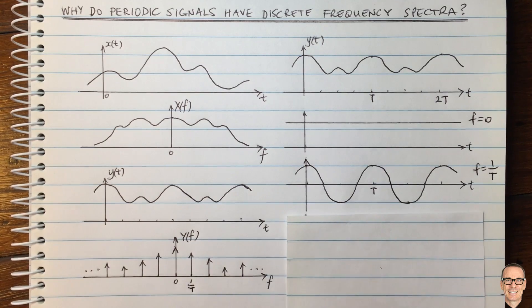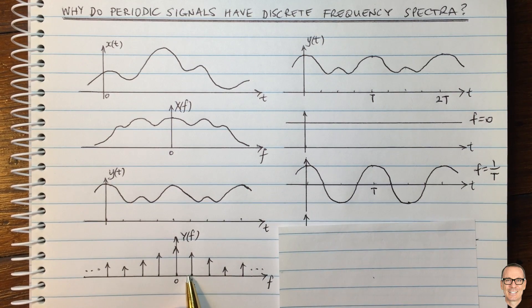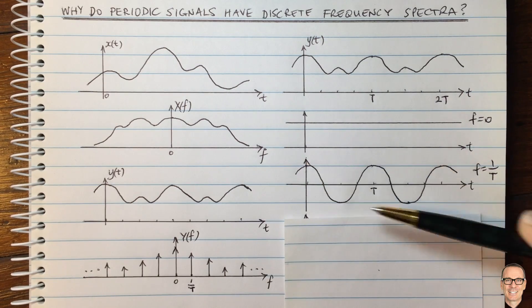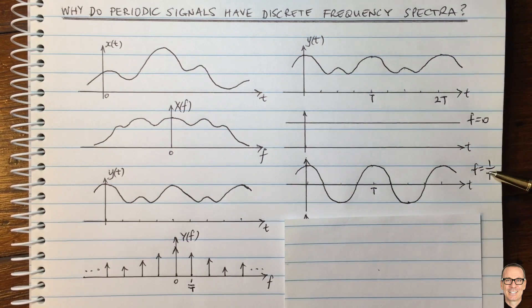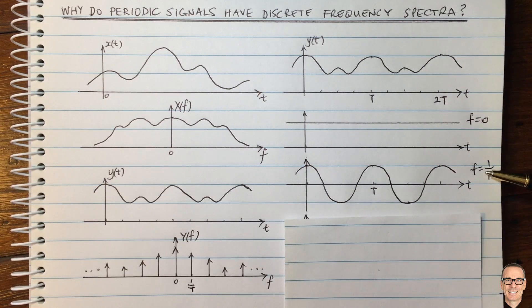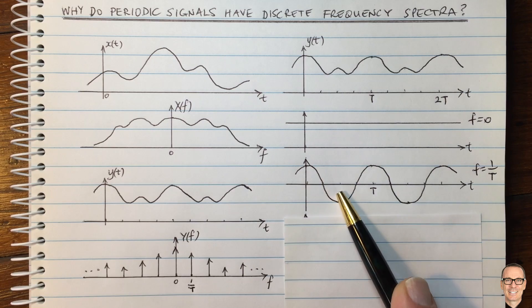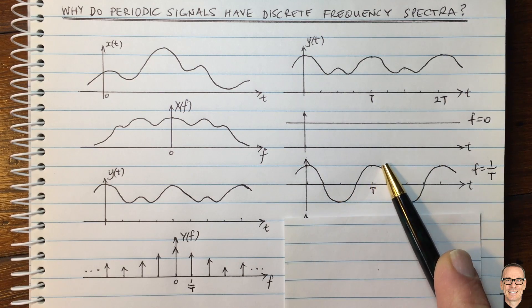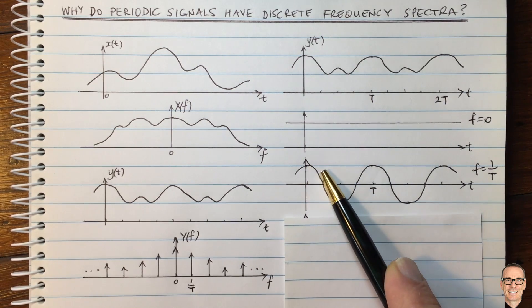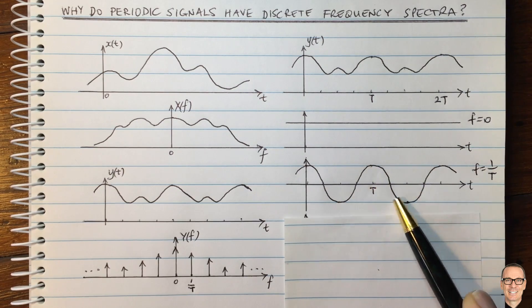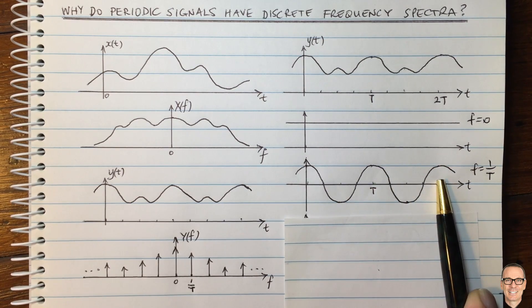So what about these frequencies in between? Why aren't there any of these frequencies contributing? Well, let's just think about it for a minute. If we had a waveform which was at a lower frequency than this, between zero and one on T, then in the time domain, this would be a waveform with a longer period. And clearly, you can see any waveform with a longer period is not going to be ready to repeat in the next period.